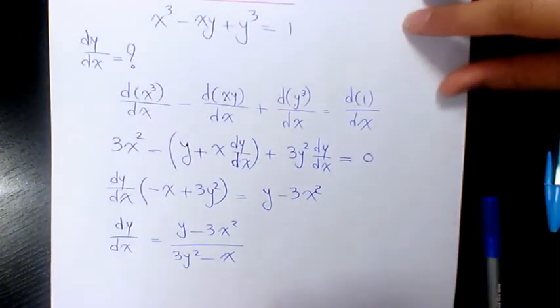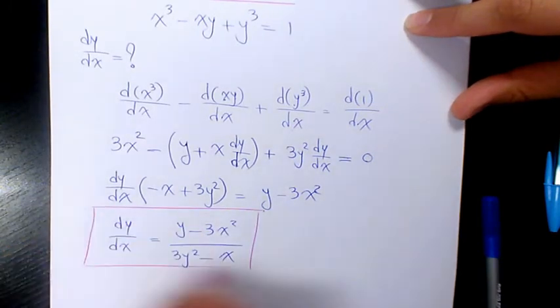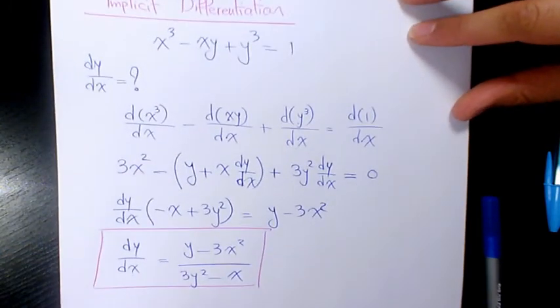So this is going to be the derivative of x³ - xy + y³ = 1.